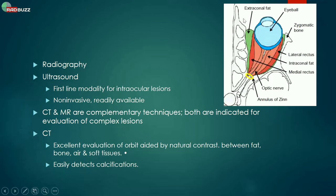We can see the colored area is the orbit itself and that's the conal part. This looks like a cone — an ice cream cone. That's the globe. Those are the recti muscles posteriorly. That's the orbital apex. This cone is bounded by intraocular muscles, and inside is the intraconal fat. The green area outside this cone is extraconal.